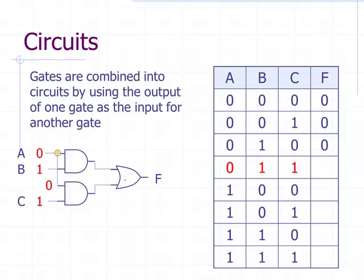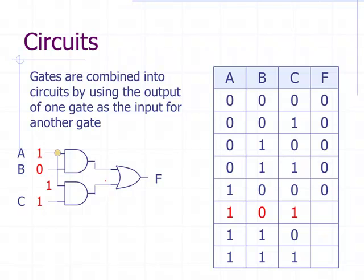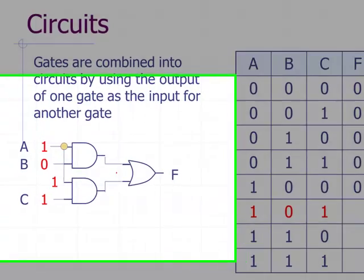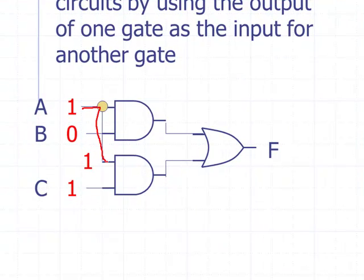If A is zero, B is one, C is one: still get two zeros from the first stage, OR gives zero. If A is one, B is zero, C is zero: two zeros through the first stage, zero through OR. Now something different — A is one, B is zero, C is one: one and zero through the first AND gate gives zero; one and one through the second AND gate gives one; and then zero OR one through the OR gate gives one.